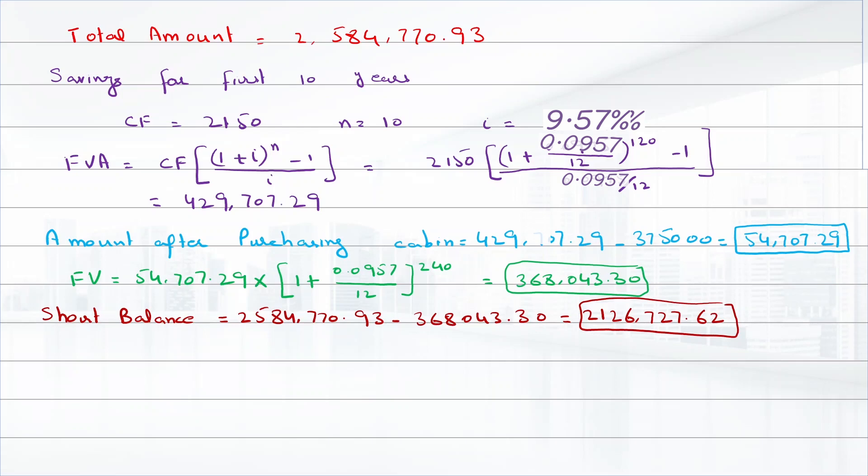This amount is the future value of the monthly savings he must make between years 10 to 30. We will find the annuity payments using the future value of annuity equation. Future value of annuity equals cash flow times [(1+i)^n - 1]/i. We will solve this equation for cash flow.